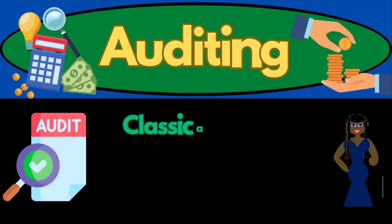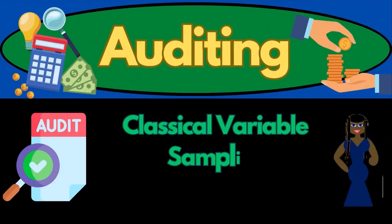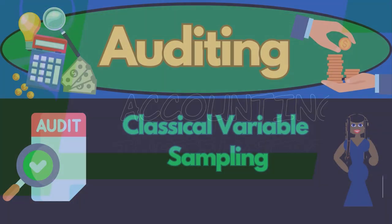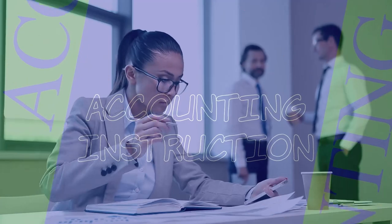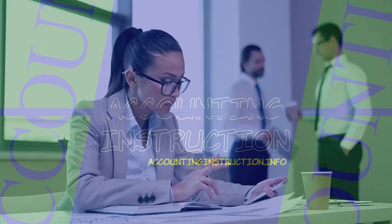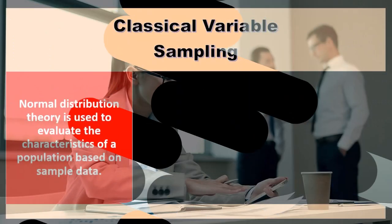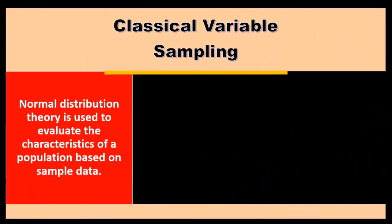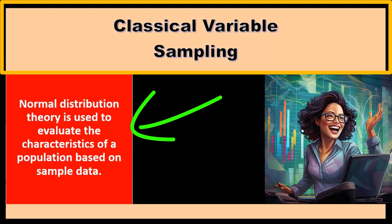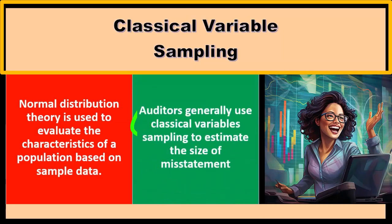In this presentation we will take a look at classical variable sampling. Within classical variable sampling, normal distribution theory is used to evaluate the characteristics of a population based on sample data.